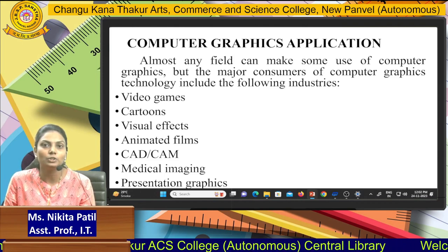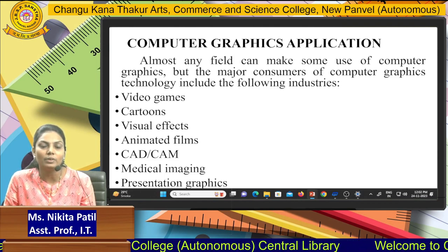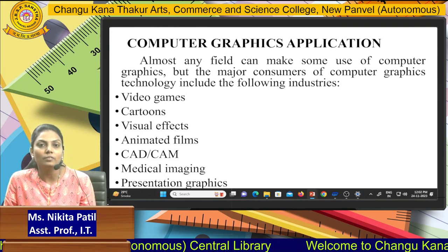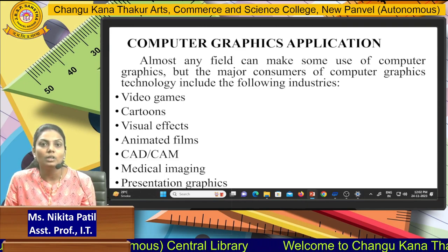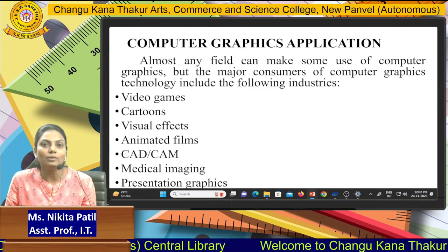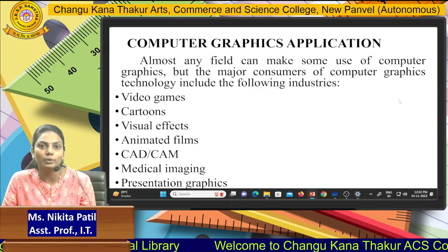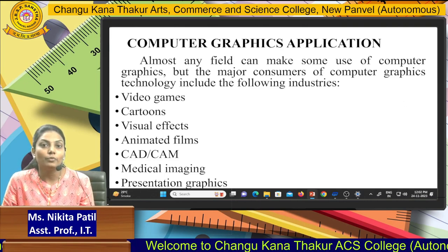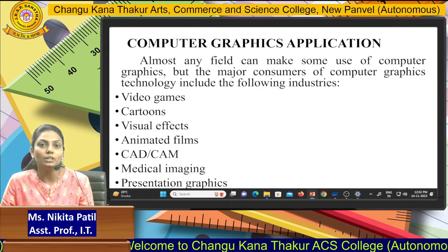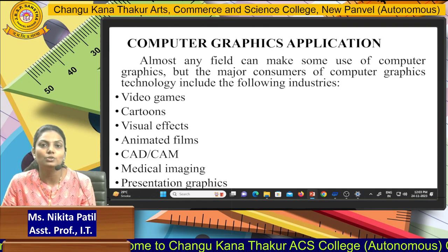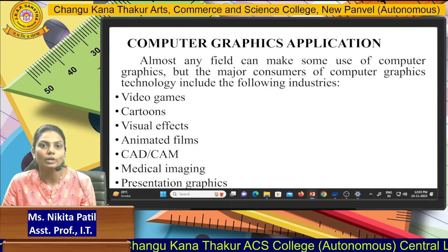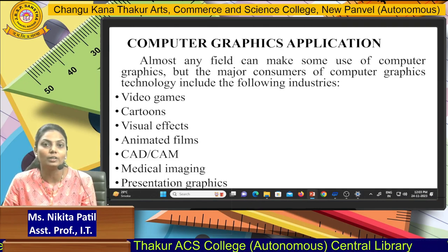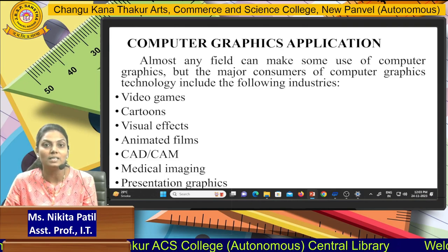Next is cartooning — cartoons can be converted into real-looking images with the help of different graphical images and animation. You can also convert cartoons or live sessions with the help of computer graphics. Next is visual effects — televisions, computers, videos, and movies can be visualized with the effect of different transitions using compatible graphics.